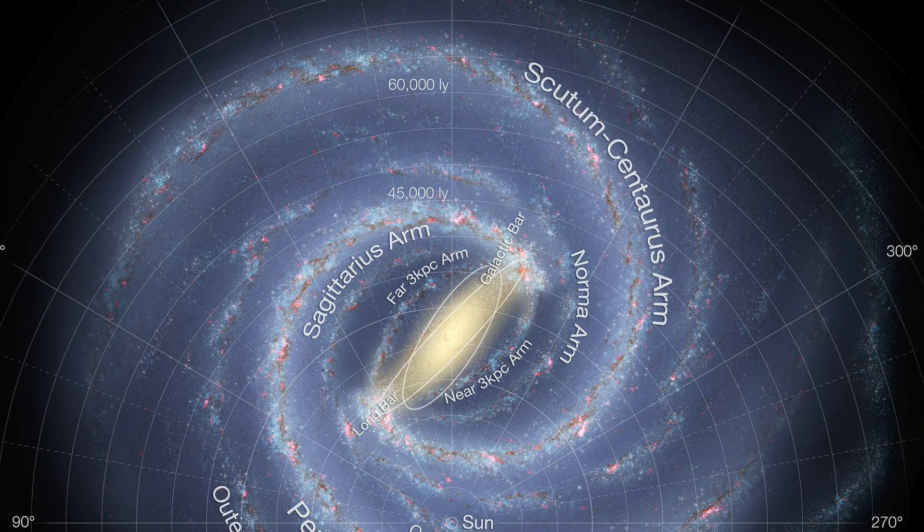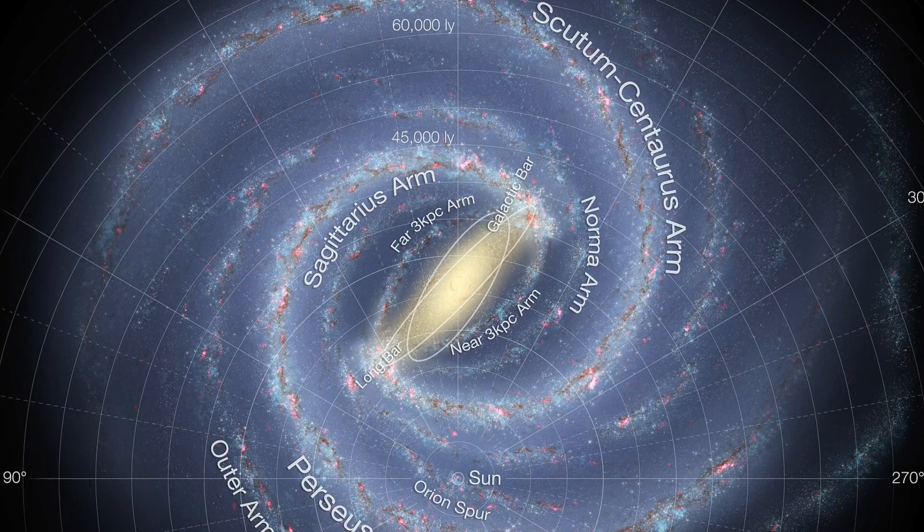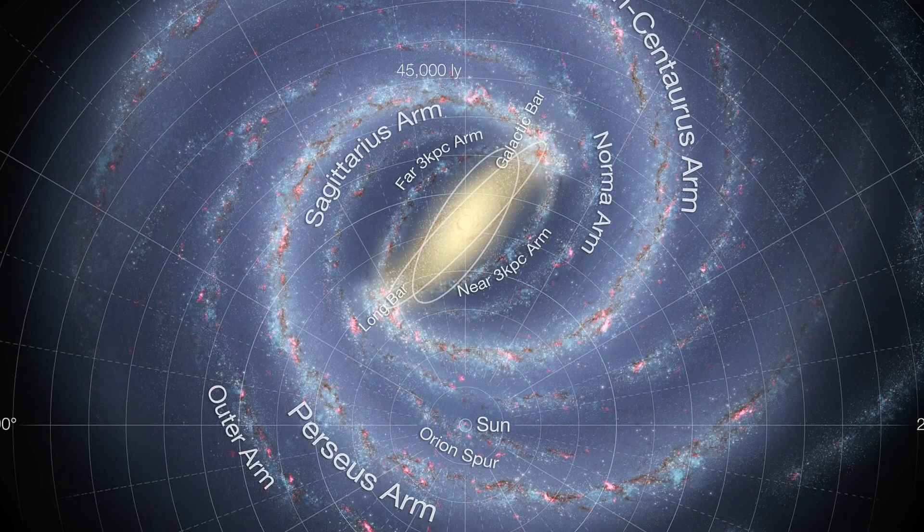This sun is one of 200 to 400 billion stars in the Milky Way galaxy. The size of this galaxy is approximately 105,000 light years in diameter, and it would take 100,000 years to travel at the speed of light, which is said to be the fastest speed in the world.